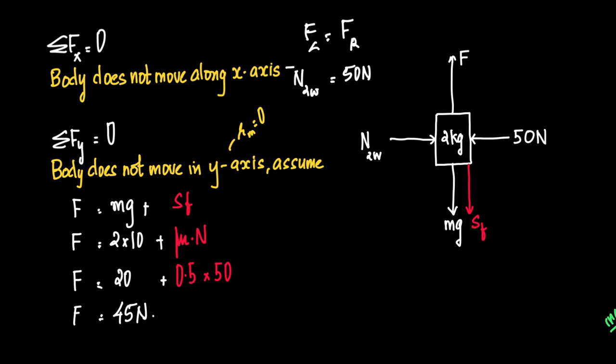What is static friction? We have to consider that the value here is actually equal to limiting friction, which equals mu into N. What is N? N is 50 Newton. We have mu given as 0.5, therefore it is 0.5 into 50. Mass is 2 kilogram, 2 into 10, 20 plus 0.5 into 50 is 25, 20 plus 25 is 45 Newton.